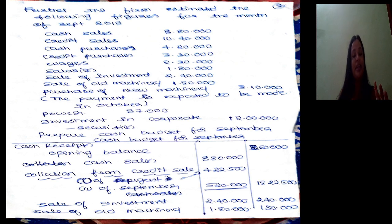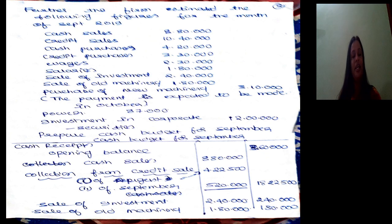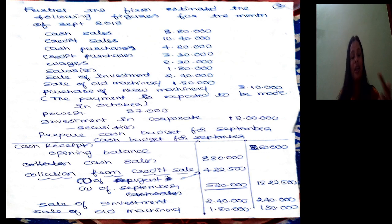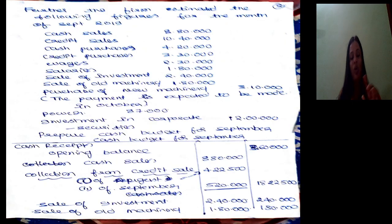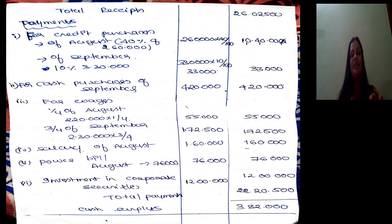Sale of investment is Rs 2,40,000 — no specific collection date mentioned, so collected in September itself. Sale of old machinery Rs 1,80,000. Purchase of new machinery payment will be made in October, so it goes to payments, not receipts. Total receipts will become Rs 26,25,000.